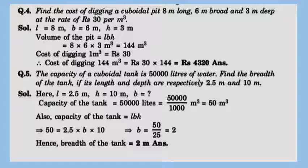In the next question, capacity is given in liters and length and depth are given — we have to find the breadth. First convert the capacity from liters to cubic meters using 1 m³ = 1000 liters. So volume equals 50,000 ÷ 1000 = 50 m³. Substituting the known values gives breadth = 50 ÷ 25 = 2 meters.